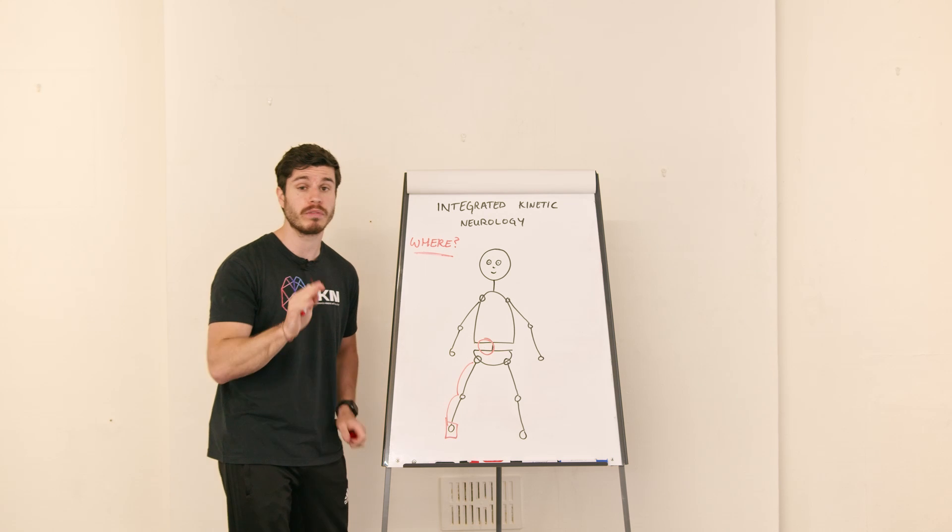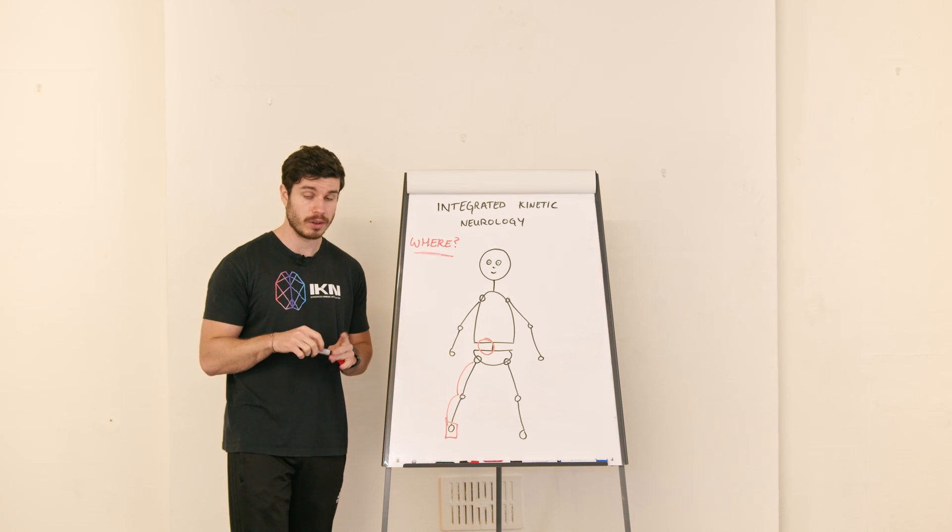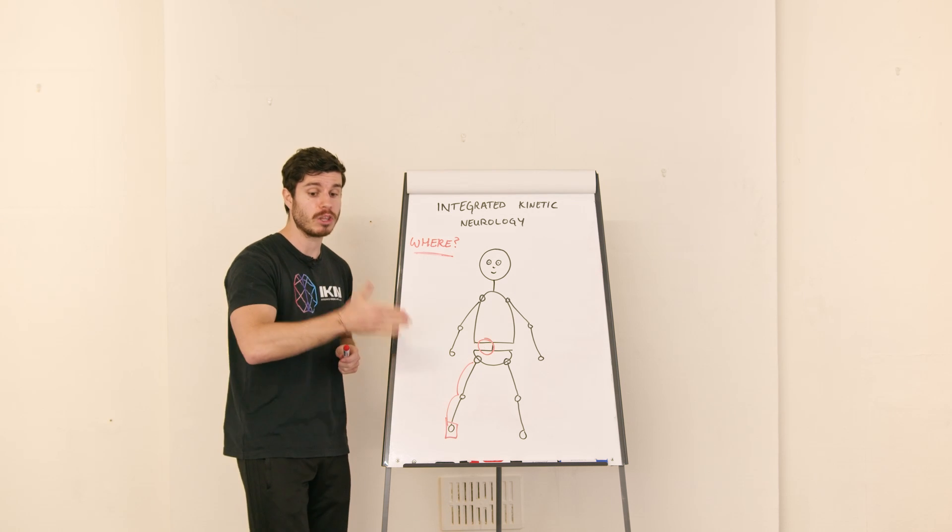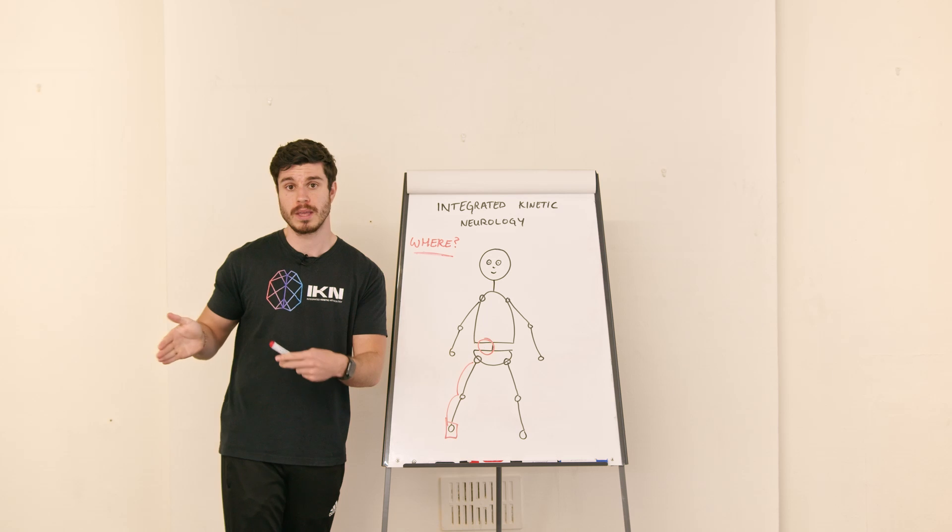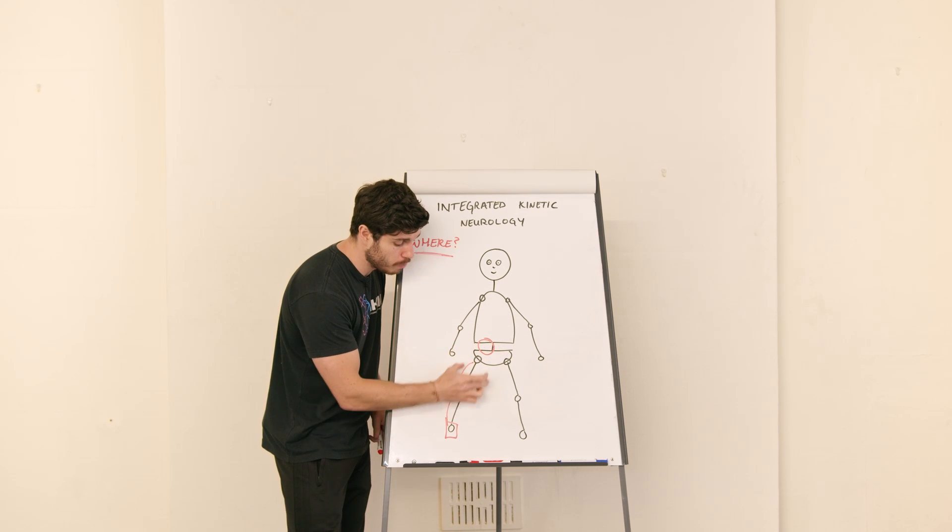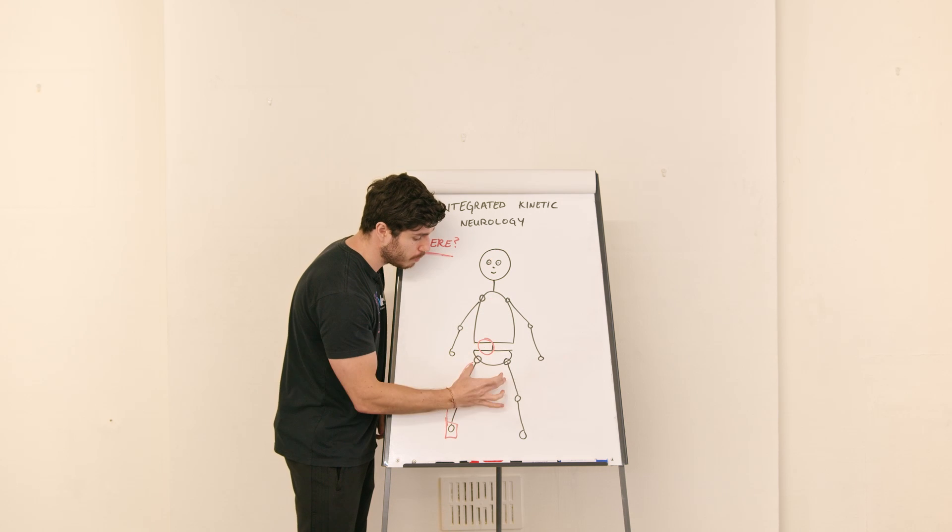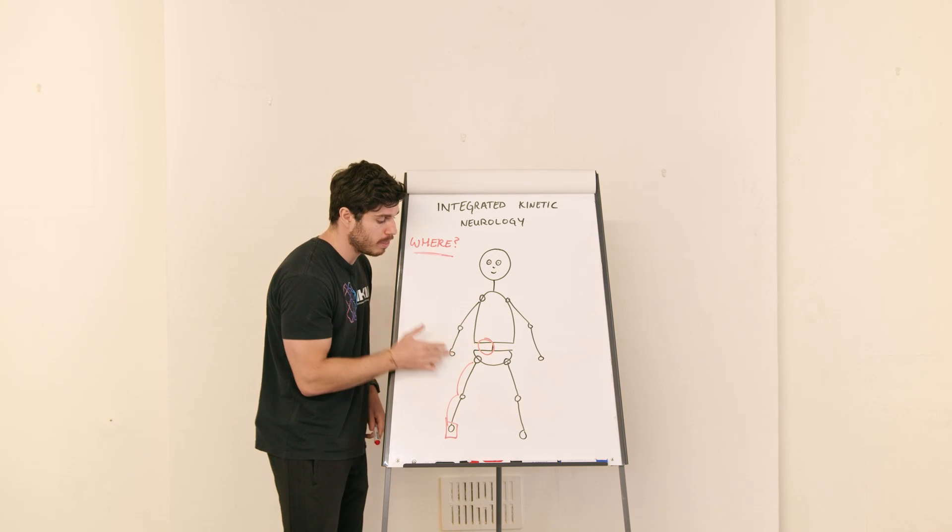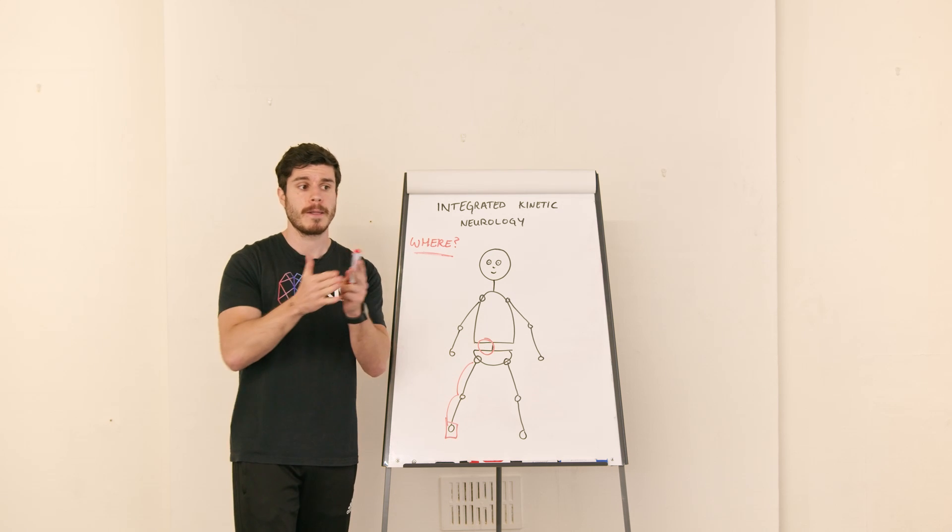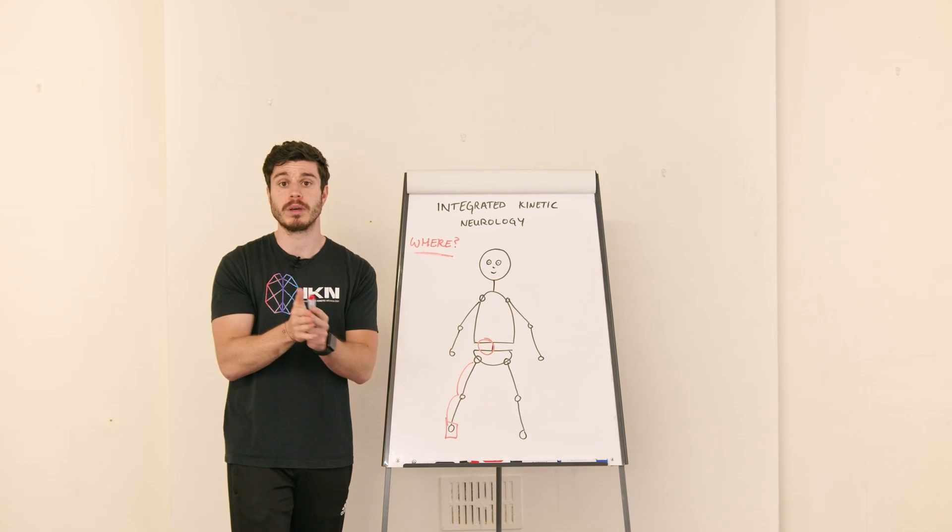This is something that we find very commonly in clients, but it all comes back to having a framework as to how you assess an individual and how you actually treat and rehab an individual. And if you can understand these basic properties that govern the movement of the lower limb, the movement of the midline, the movement of the upper limb, then we can be very specific with how we actually progress an individual through treatment and through rehab.